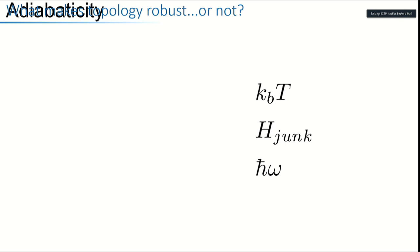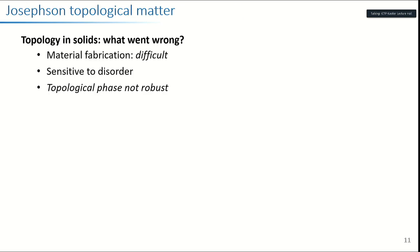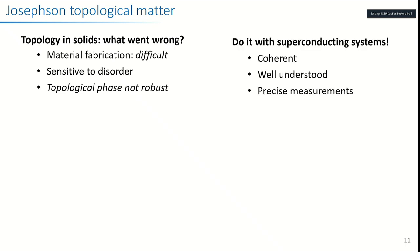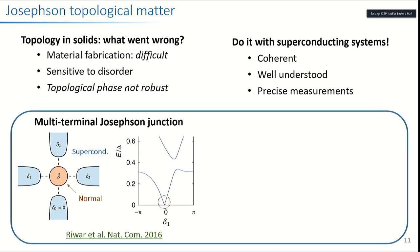What makes a topological state robust or not has to do with the role of thermal excitations and, most importantly, what I call H-junk — terms in your Hamiltonian that you don't know about — which can open gaps in your spectrum and ruin topological protection. For real solids, material fabrication is difficult, they're sensitive to disorder, and there are many unknown Hamiltonian terms. The idea is: can we do it with superconducting systems? They're well-understood and coherent, and we can make precise measurements. The inspiration was work showing you could map Weyl semimetals to multi-terminal Josephson junction systems.